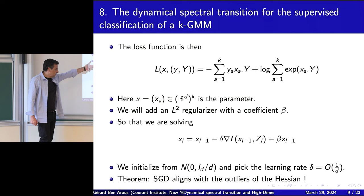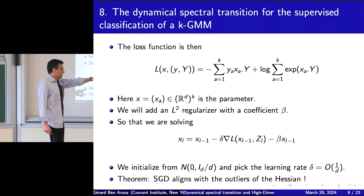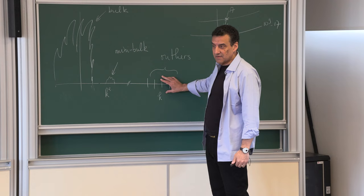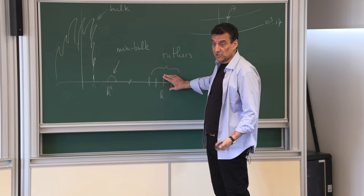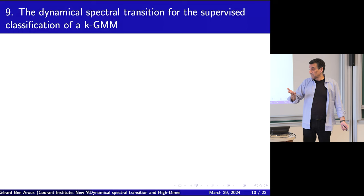Theorem stated vaguely: the solution of this SGD aligns with the outliers of the Hessian. More precisely, not only does the Hessian have this outlier structure — which we also prove — but essentially SGD, after a short initial phase, lives in the space generated by the outlier eigenvectors. More importantly, those eigenvectors are very close to the centers of mass, the mu_a, which is what you want to find.